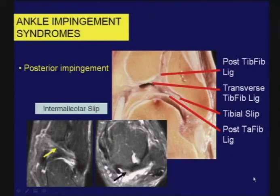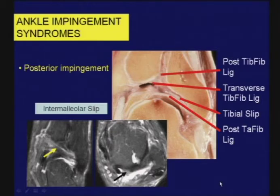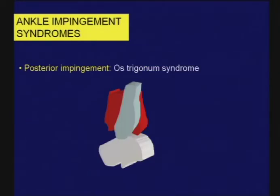The intermalleolar slip — a portion of the posterior talofibular ligament — may become thickened and extend across the ankle joint, and it too has been suggested as a cause of posterolateral ankle impingement. I have no proven cases of that. This is the closest I could come: clinically I suspected impingement, we suggested maybe the intermalleolar slip was thickened, but no surgery was done.